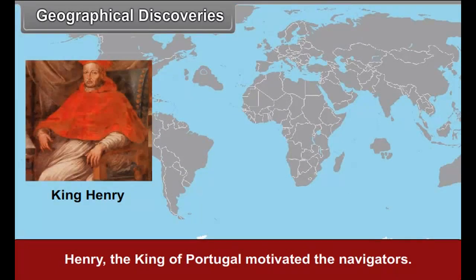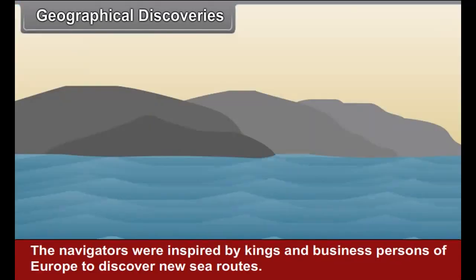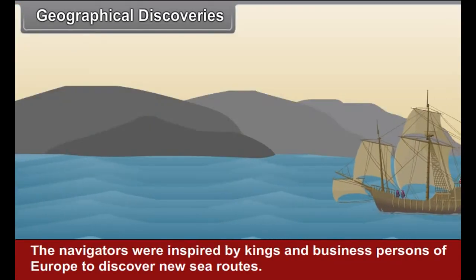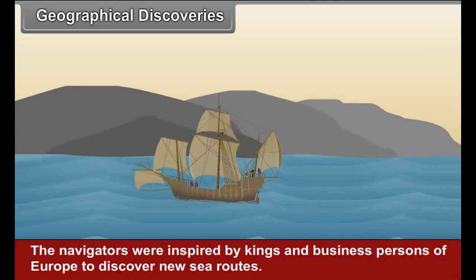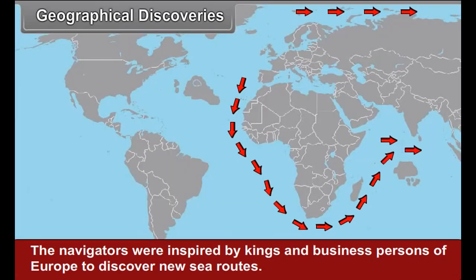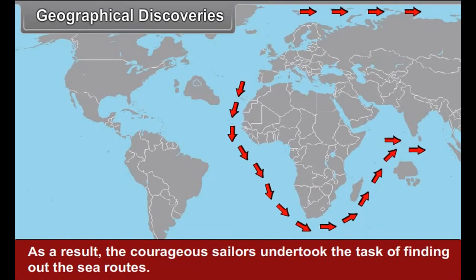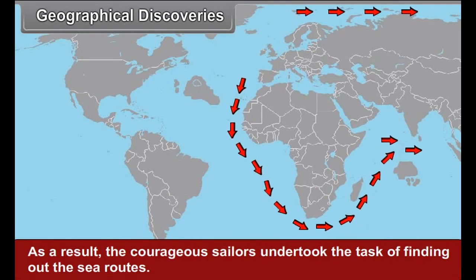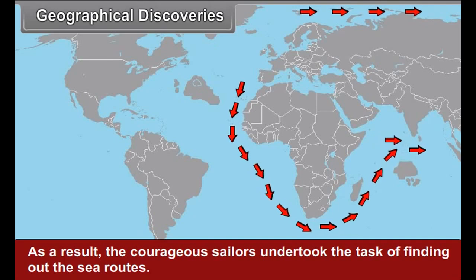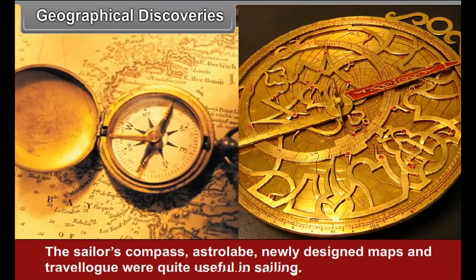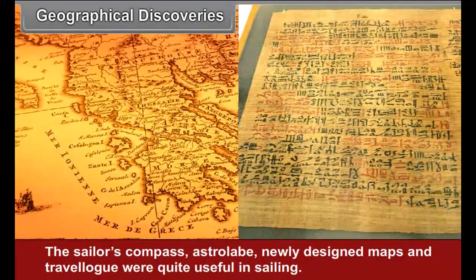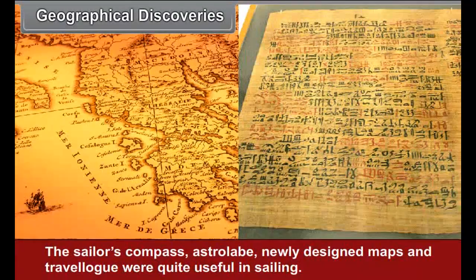The traders in Europe were curious to begin trade in the eastern nations. Henry, the king of Portugal, motivated the navigators. The navigators were inspired by kings and businesspersons of Europe to discover new sea routes. As a result, the courageous sailors undertook the task of finding out the sea routes. The sailors' compass, astrolabe, newly designed maps, and travelogue were quite useful in sailing.